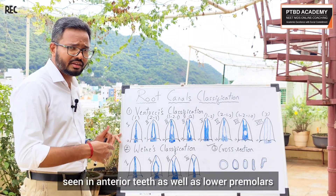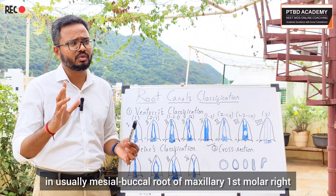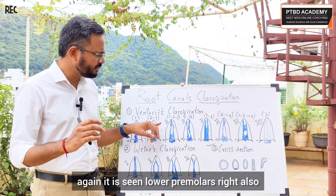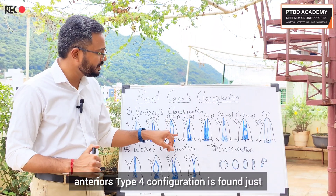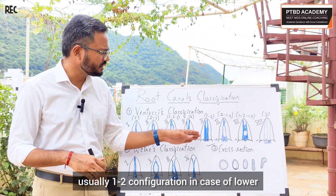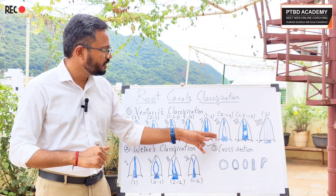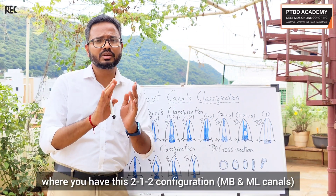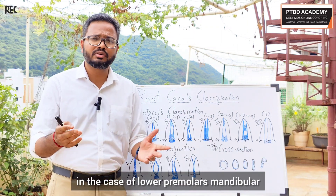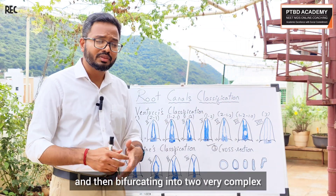Let me briefly mention which teeth correlate to each type. Type 1 is usually seen in anterior teeth and lower premolars. Type 2 is usually seen in the mesiobuccal root of maxillary first molar, where MB2 creates a 2-1 configuration. Type 3 is seen in lower premolars and sometimes lower anteriors. Type 4 is found in the mesial root of the mandibular second molar. Type 5 — 1-2 configuration — is seen in the lower first premolar. Type 6 — 2-1-2 — is seen in the mesial root of the lower first molar, with the mesiobuccal and mesolingual canals.